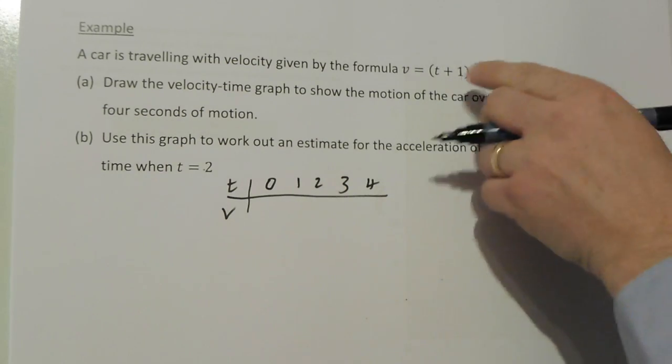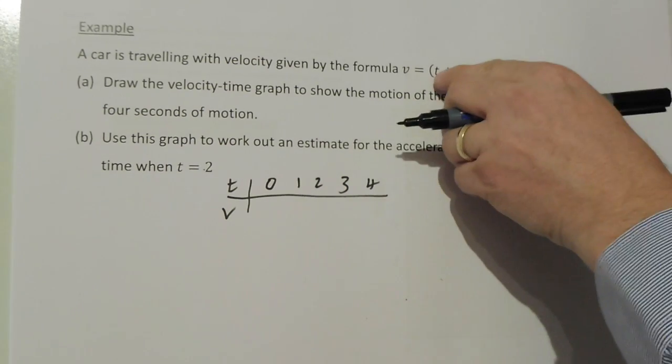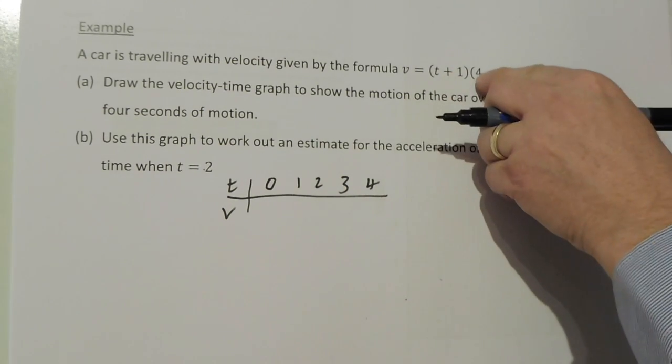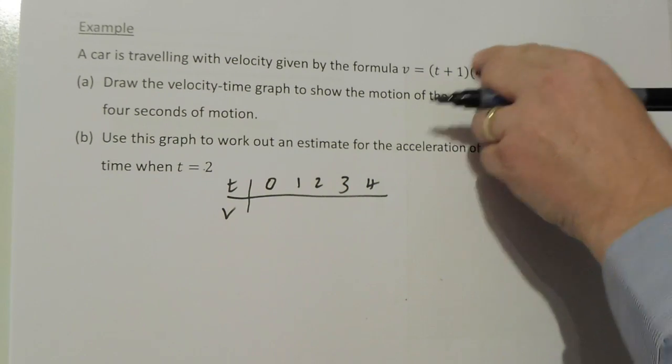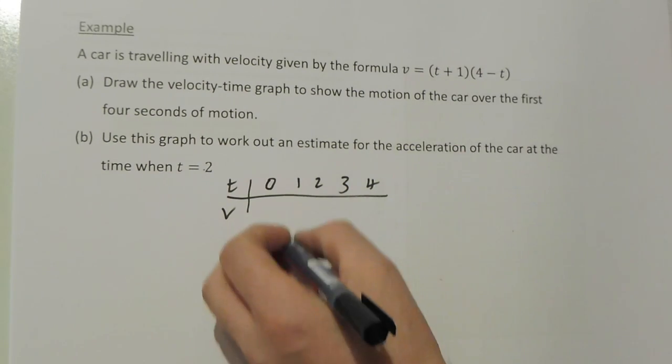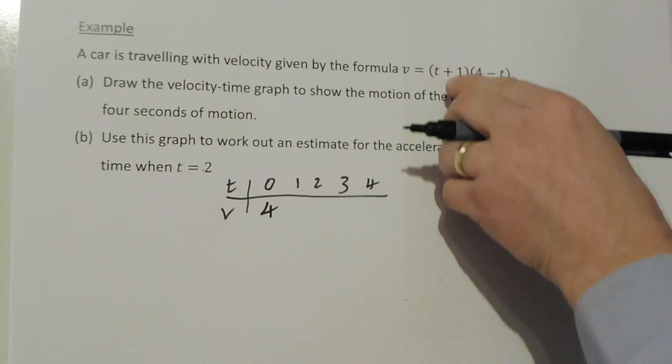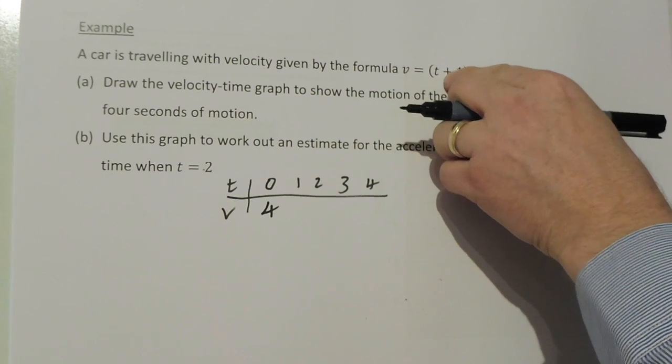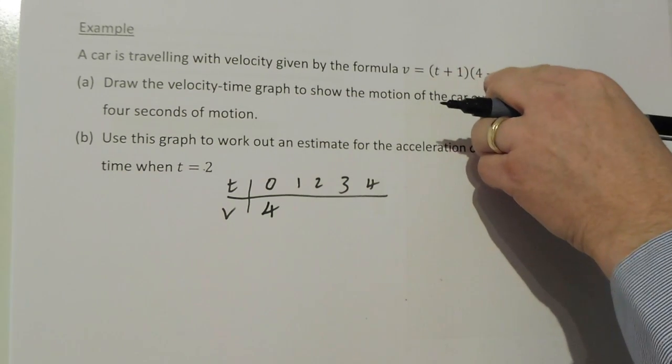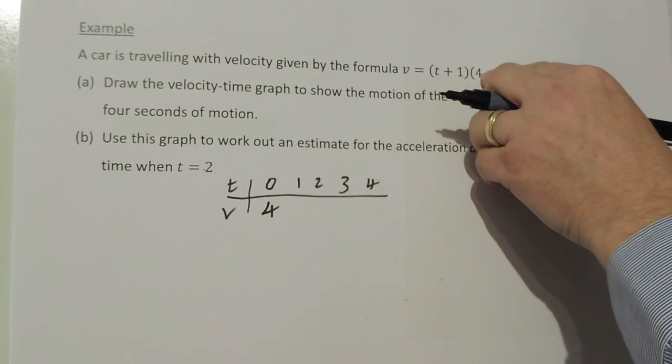If we put t=0 into the formula: 0+1 is 1, 4-0 is 4, so 1×4 equals 4. If I put t=1: 1+1 is 2, 4-1 is 3, and 2×3 equals 6.